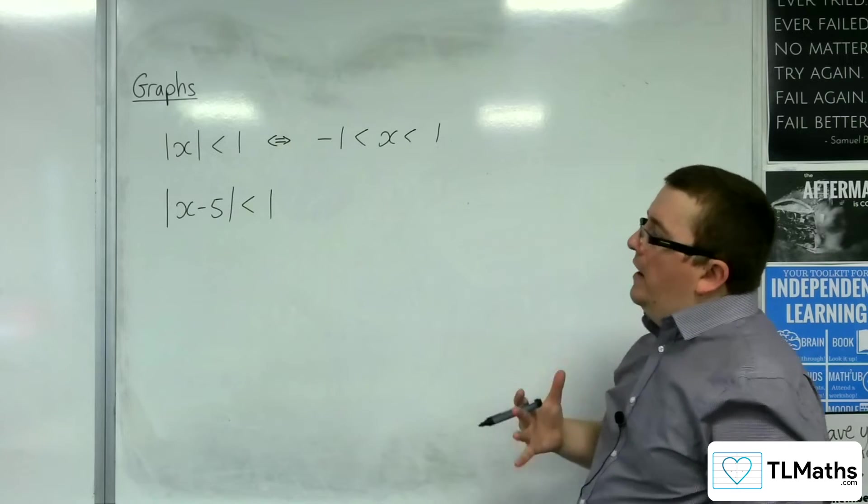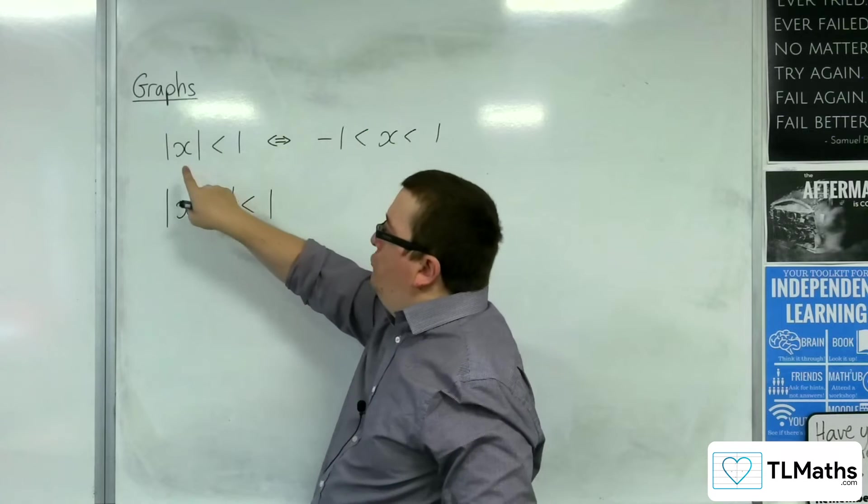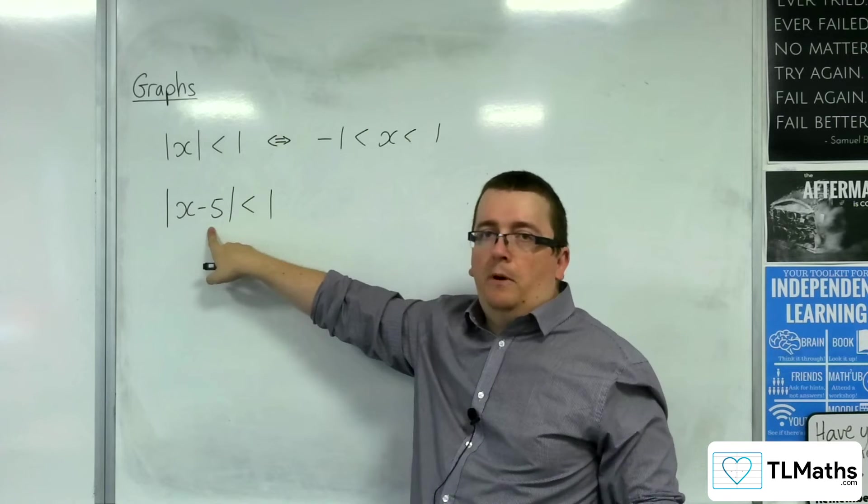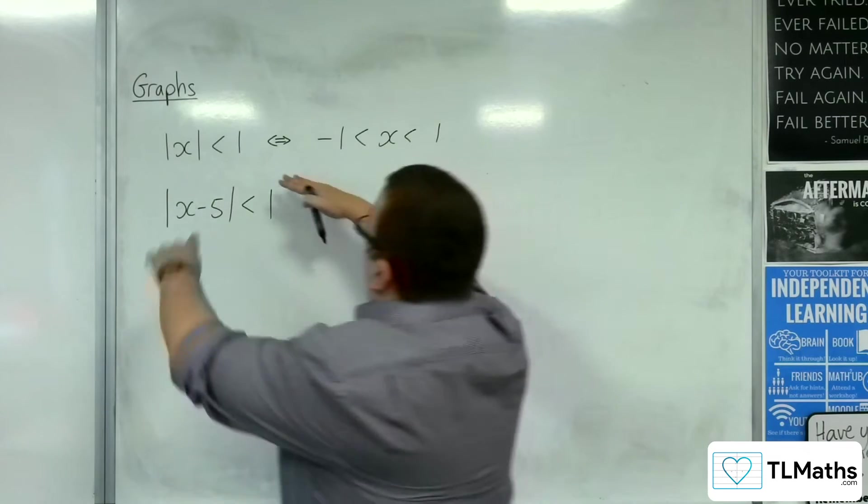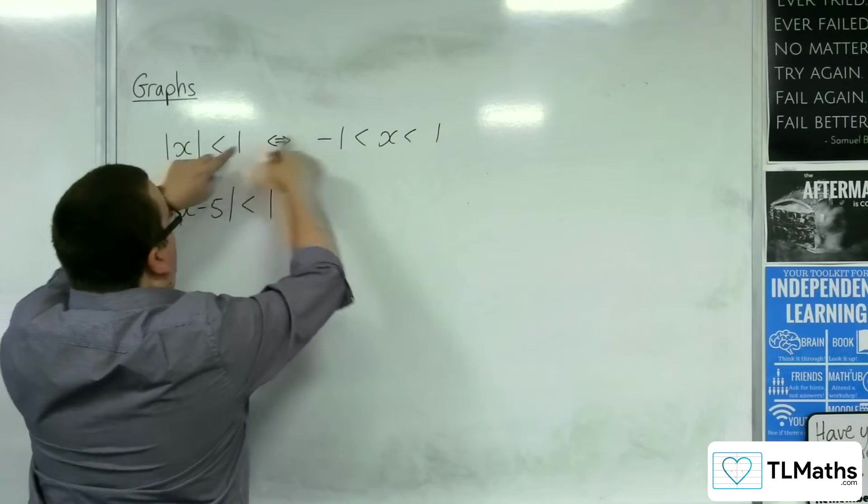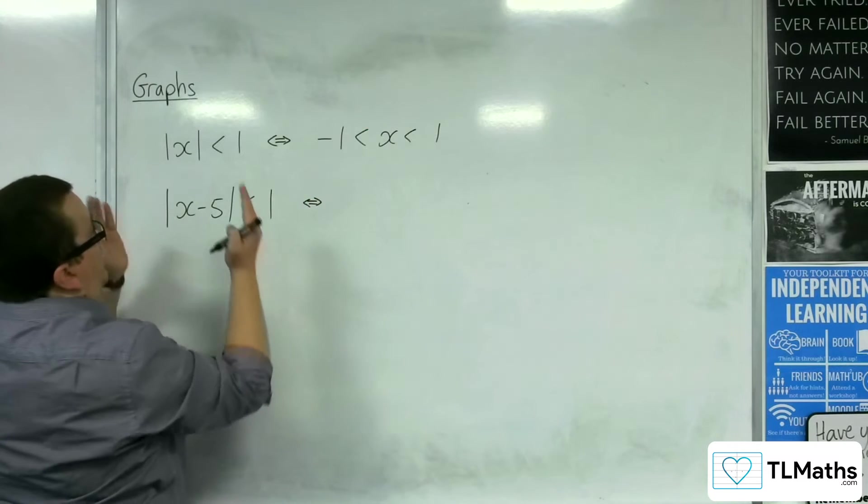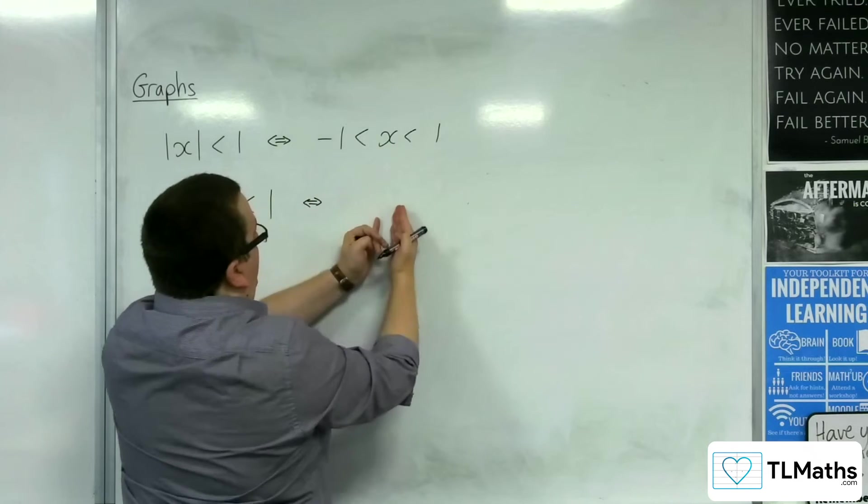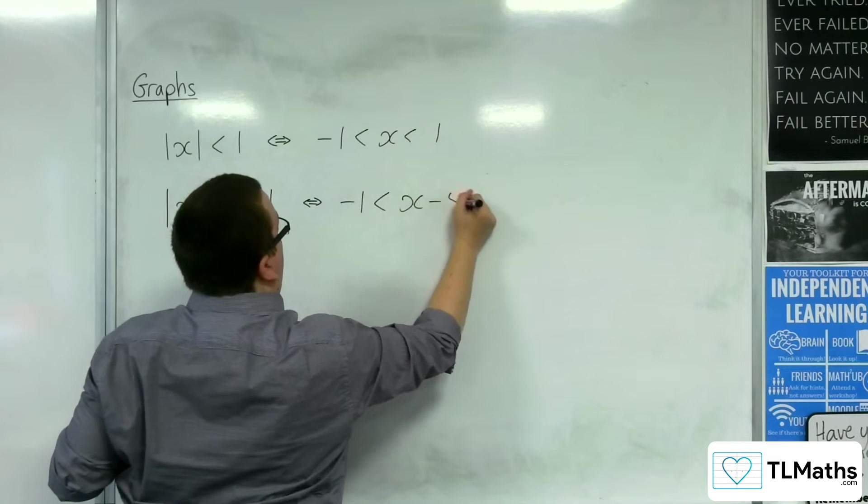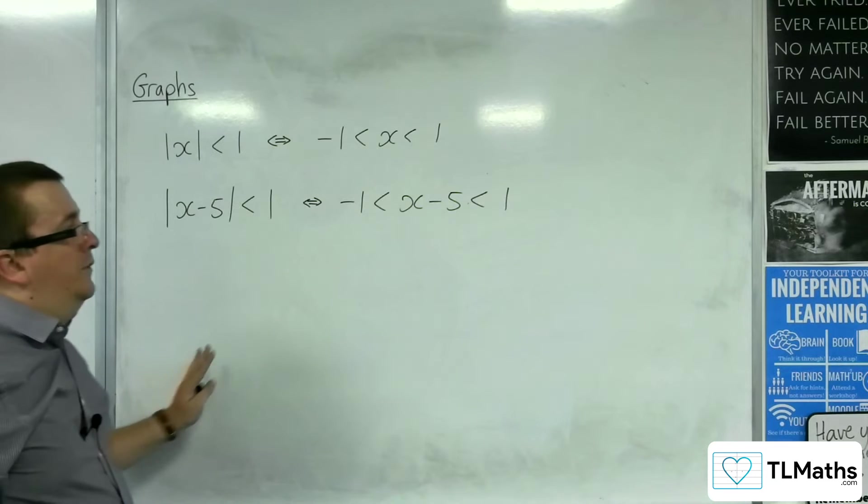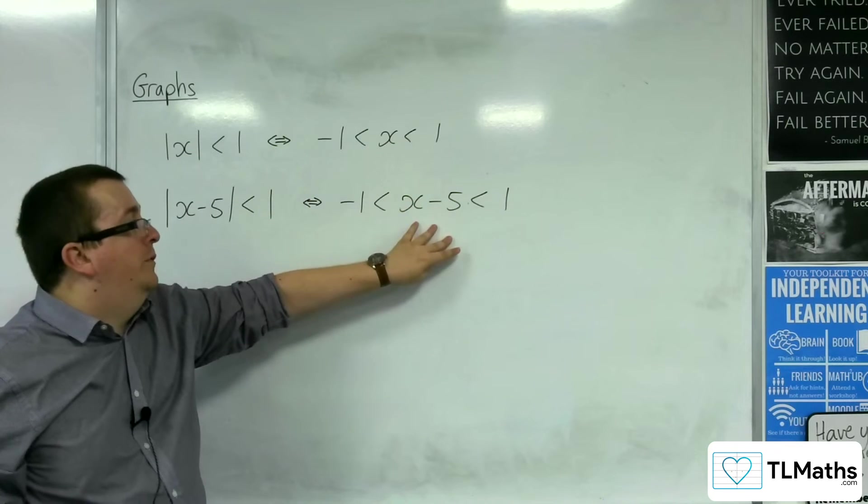Well, what I've done to get from there to there is I've replaced the x with x minus 5. So, it stands to reason that if these two things are the same, this and this, then I could just replace the x in here with x minus 5. And these two things should be equivalent. So all I've changed is that the x has become x minus 5 in both of them.